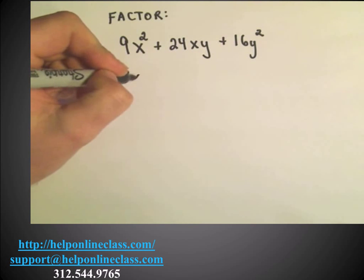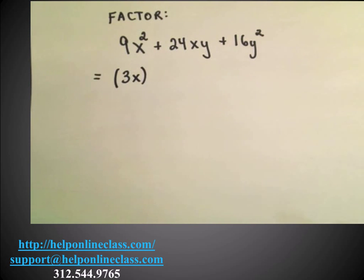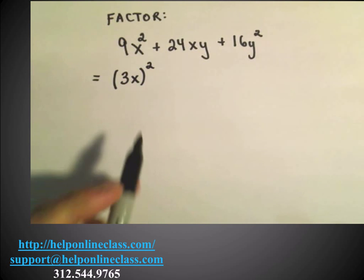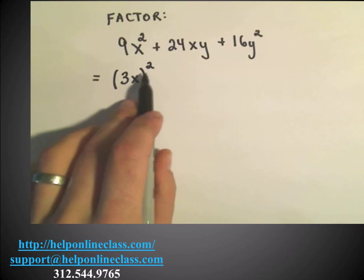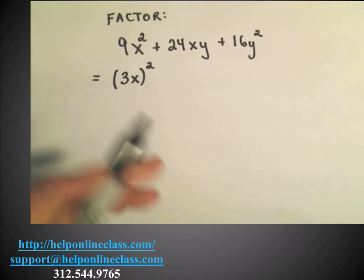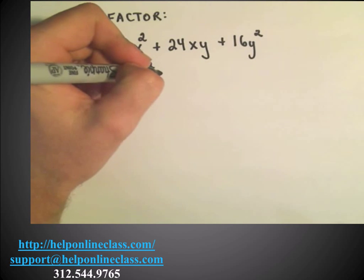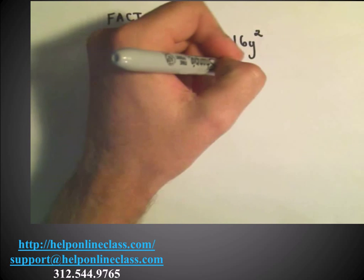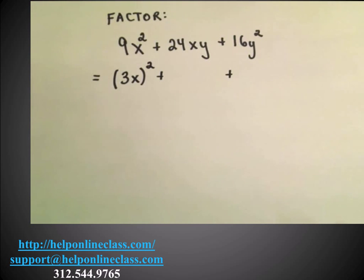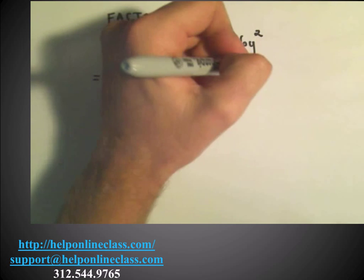Well, I could rewrite 9x squared as, I could put 3x in parentheses and then square it. So if I multiply this out, if I square it, 3 squared will be 9 and x squared is x squared. Let's see, I'm going to also do the same thing for my 16y squared. We'll come back to the middle term.